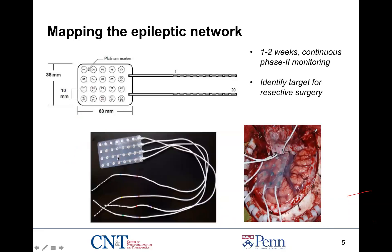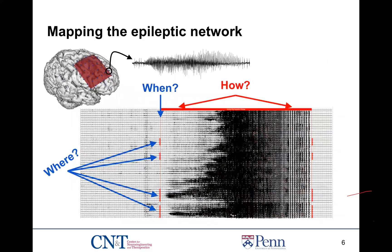An example of an ECoG array is a two-dimensional grid — in this particular case, a four-by-eight grid, so 32 contacts implanted onto the subdural area of the cortex. It remains there for about one to two weeks, where data is continuously collected in a phase-two monitoring. The goal of this monitoring is to identify a target for resective surgery — to identify where exactly you want to cut and remove a portion of the cortex. Each individual electrode can be visualized in terms of its electrical potential in a vertical montage over time.